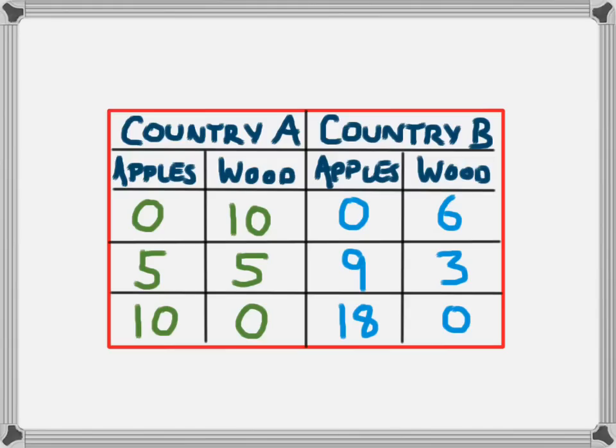All of this information can be summarized in this table. Each of the three lines are possibilities for the country. Country A could produce zero apples or ten units of wood, or ten apples and zero units of wood. But we're going to say that both economies will want to operate on the middle line, where Country A consumes 5 apples and 5 units of wood and Country B has 9 apples and 3 units of wood. Neither economy could consume more than this because all of their resources are being used — they're sitting on that production possibility frontier and neither economy can move beyond that point.